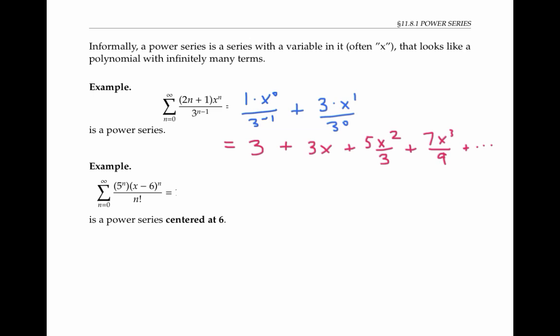I want to point out that when working with power series, x to the zero is always taken to be one, even though there's a possibility that x could end up being zero, and zero to the zero is considered undefined in other contexts. When working with power series, x to the zero for any value of x is one.